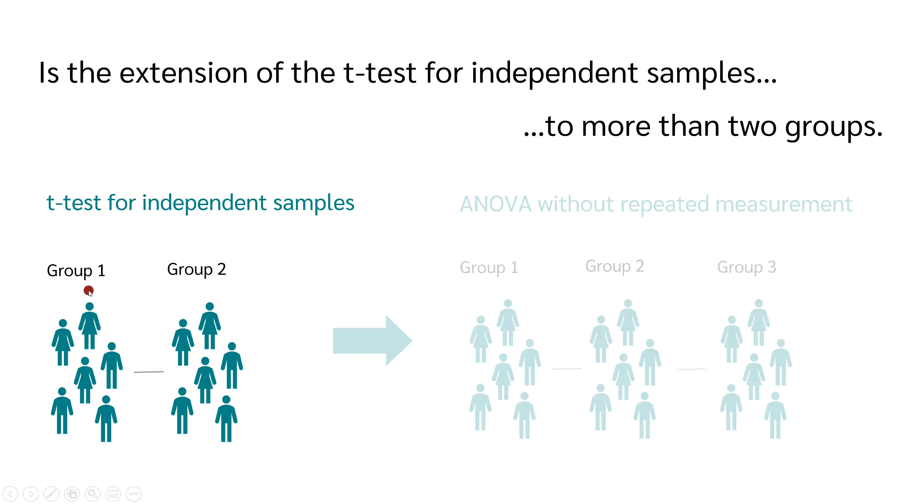If we want to compare more than two independent groups, we use the analysis of variance. In case of the t-test, we used an independent t-test if the two groups or samples were independent. This is the case if one person in the first group has nothing to do with a person from the second group. Exactly the same now applies to the analysis of variance without repeated measures.